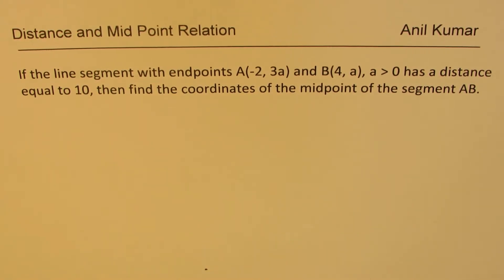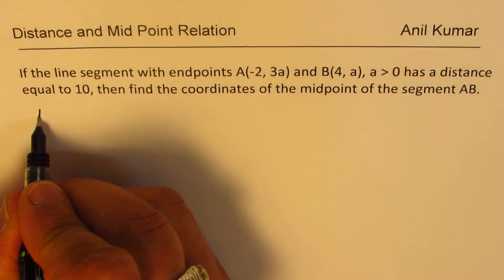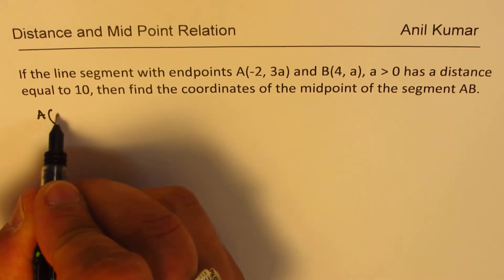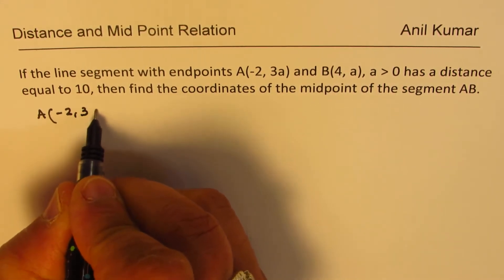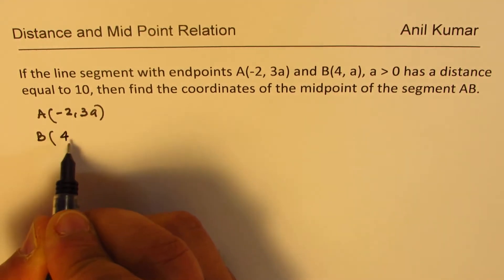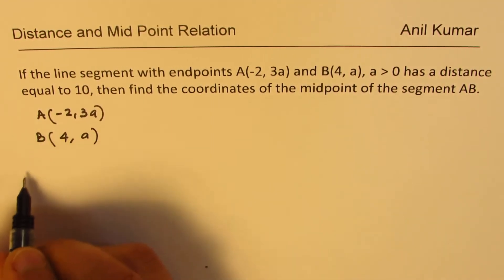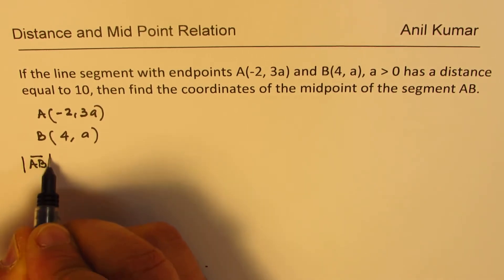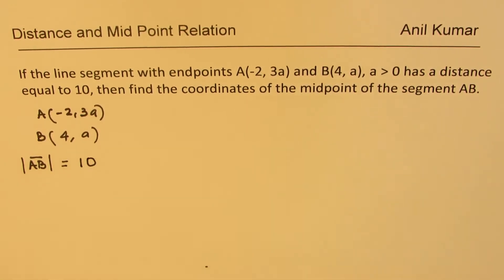I'd like you to pause the video, answer the question, and then look into my suggestions. Now, we are given two points A and B. Let's write down these points as A(-2, 3a) and B(4, a). The distance AB from A to B is given to us as 10 units.